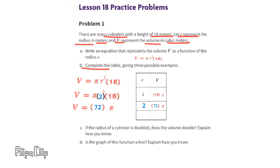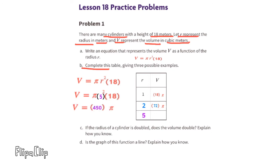For this last example, let's use 5 as the radius, so we substitute r with 5. V equals pi times 5 squared times 18. Five times 5 times 18 is 450. When the radius is 5, the volume is 450 pi. Part c: if the radius of a cylinder is doubled, does the volume double? Explain how you know.